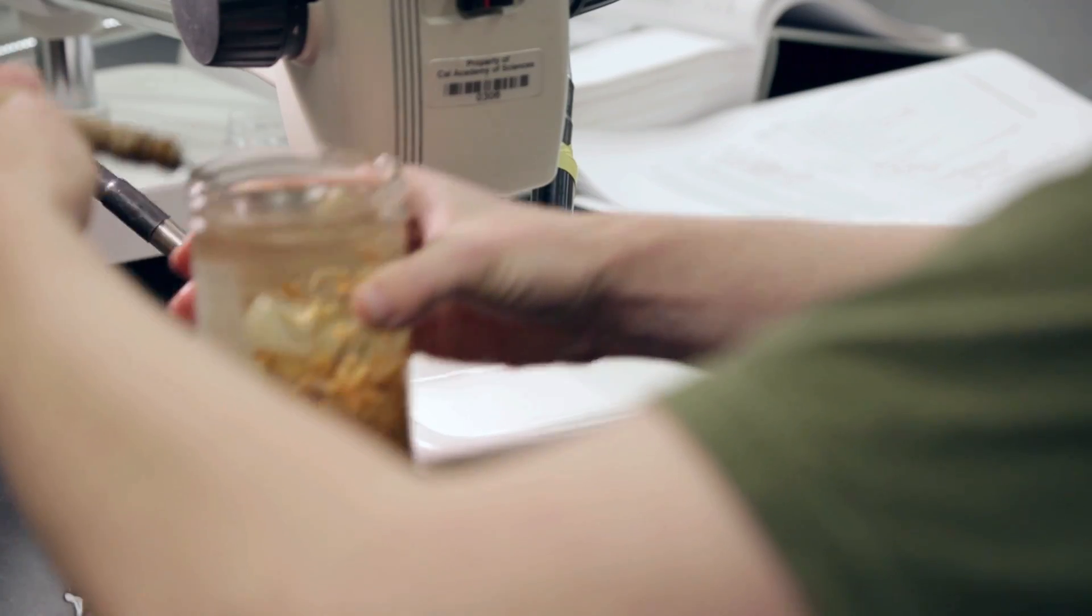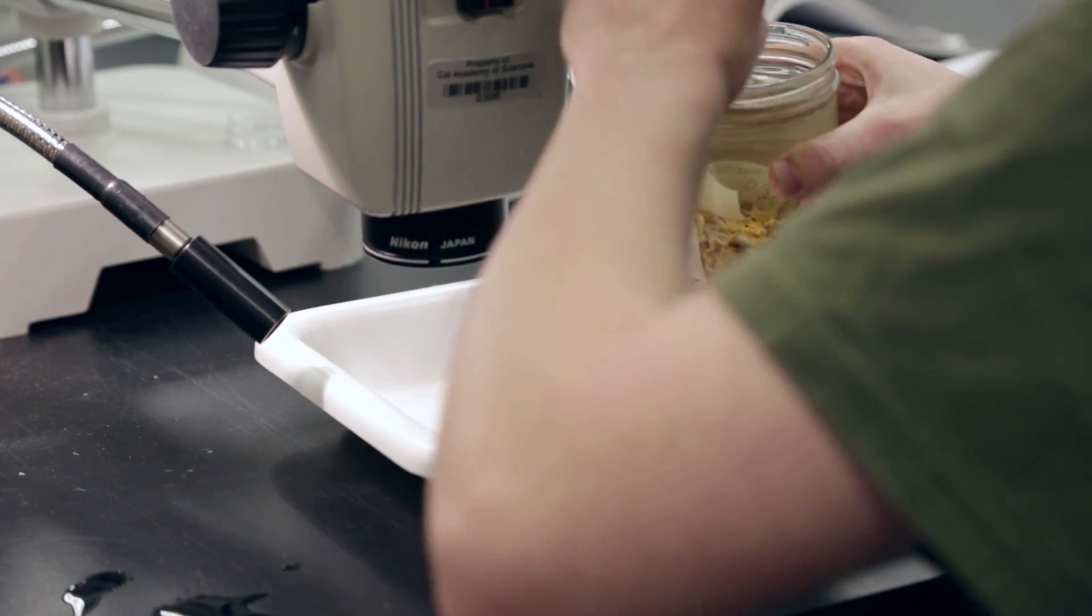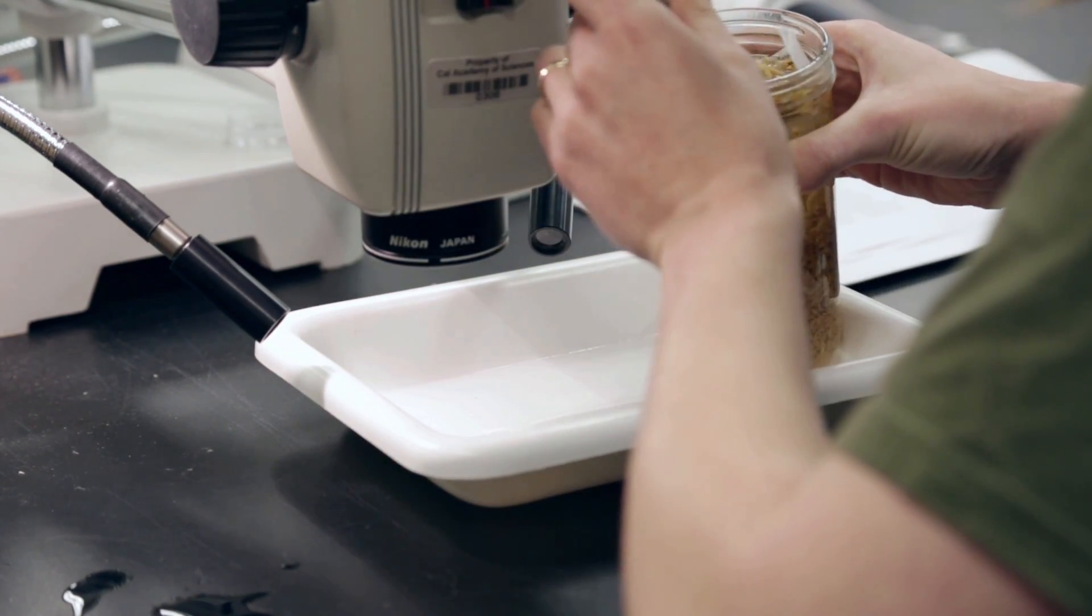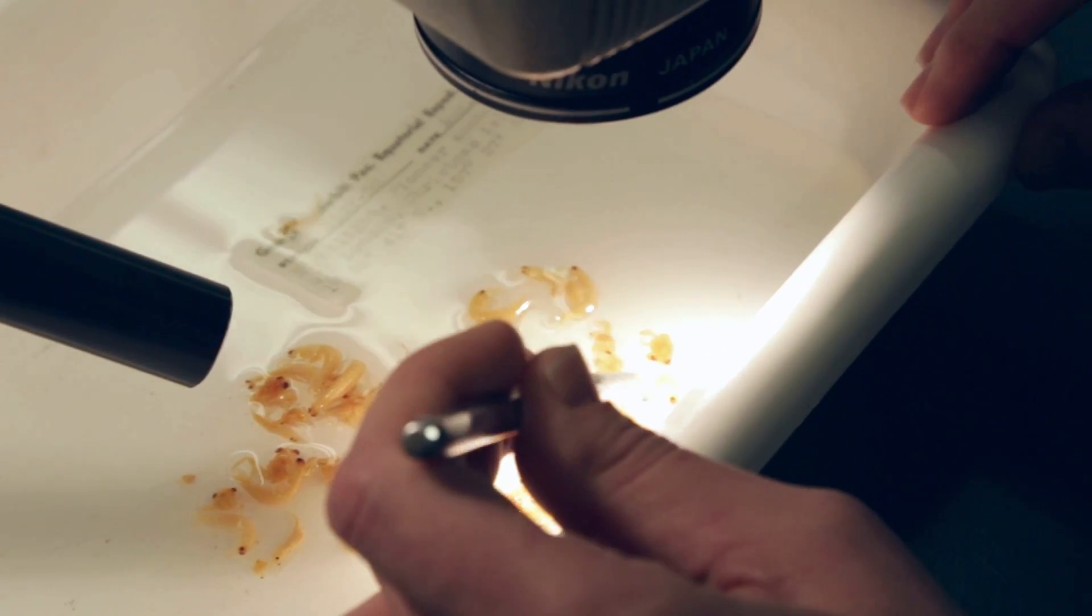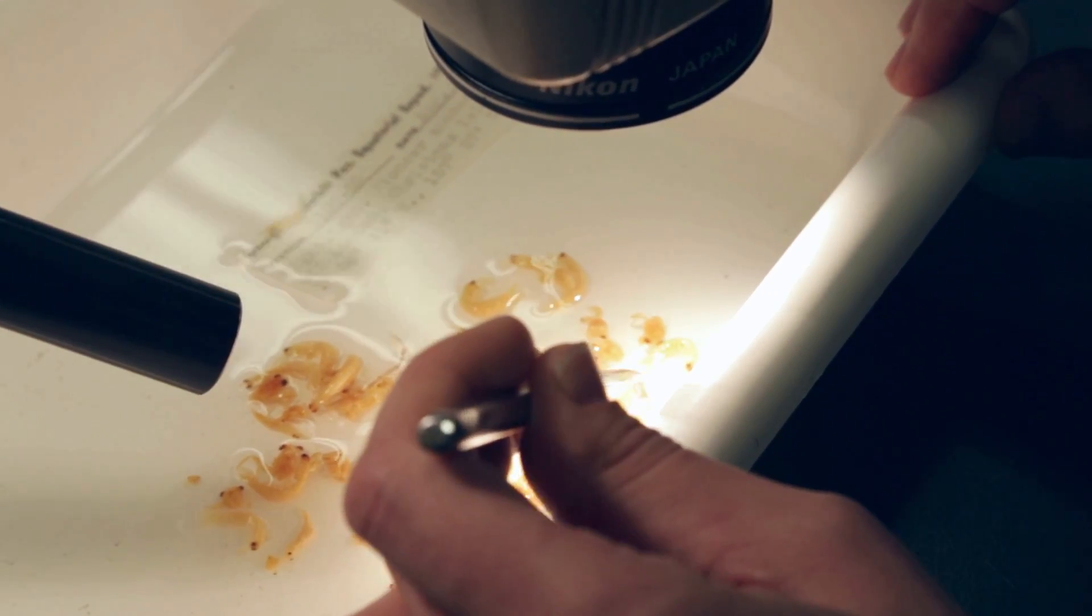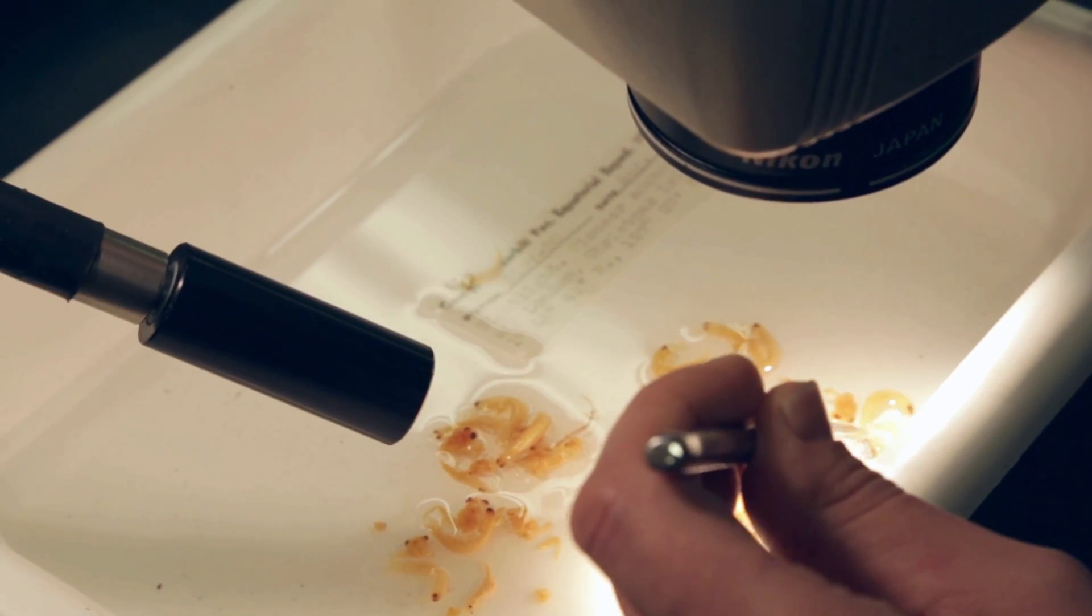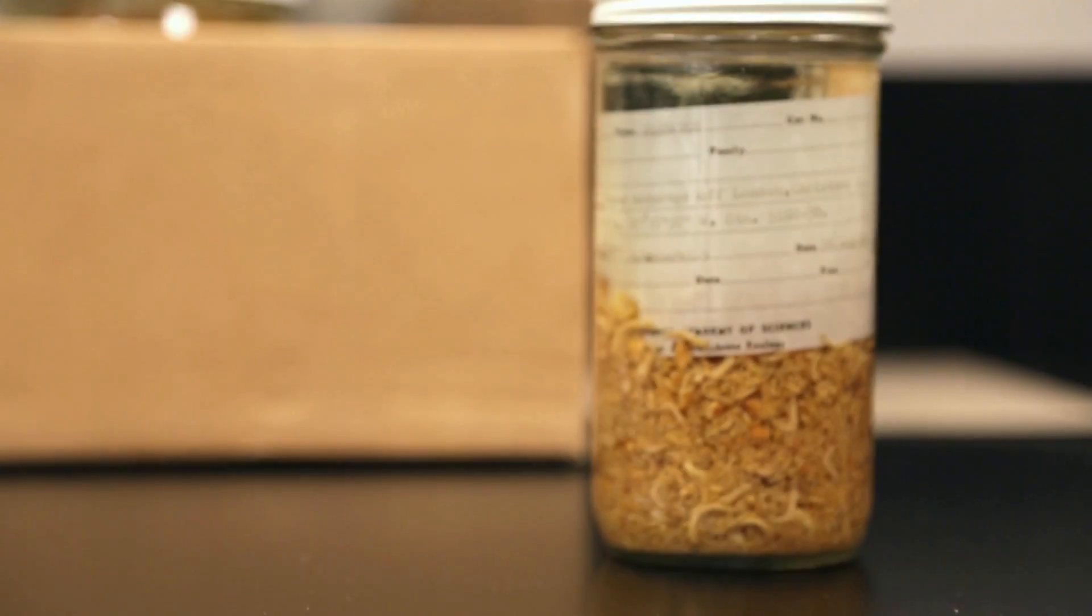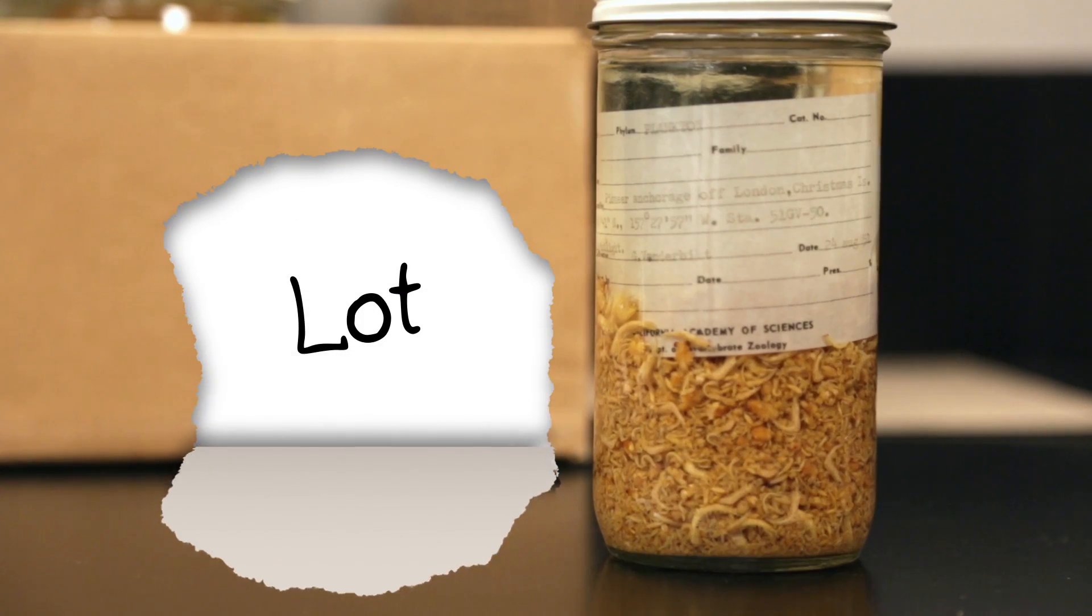Here's a slightly different example. Let's say instead of a single specimen like Mr. Sand Dollar, we gather a whole net full of different kinds of plankton. You could spend the rest of your life sorting through that one sample of plankton into all the different species and then giving a catalog number to every single one of the little guys. We take a simpler way instead and record this entire net full as a single collection, a single lot.